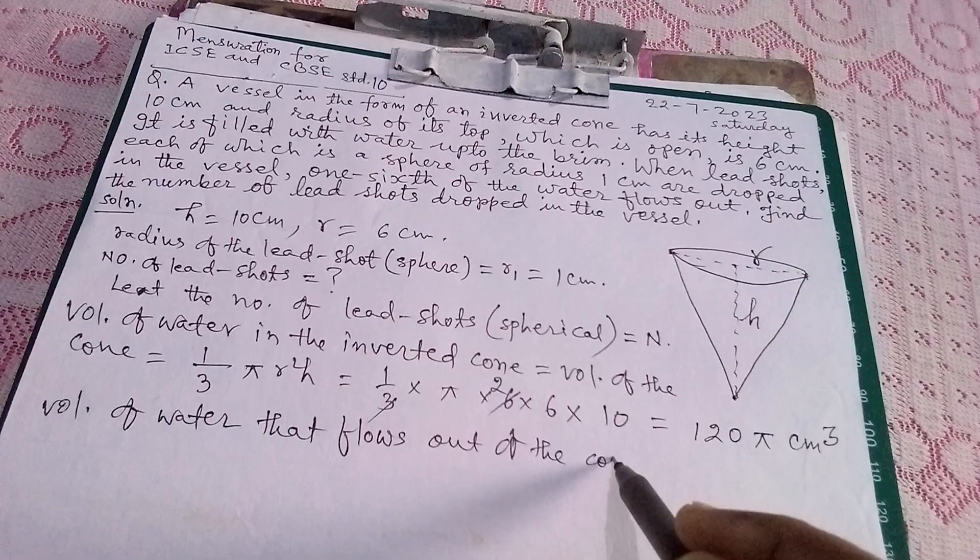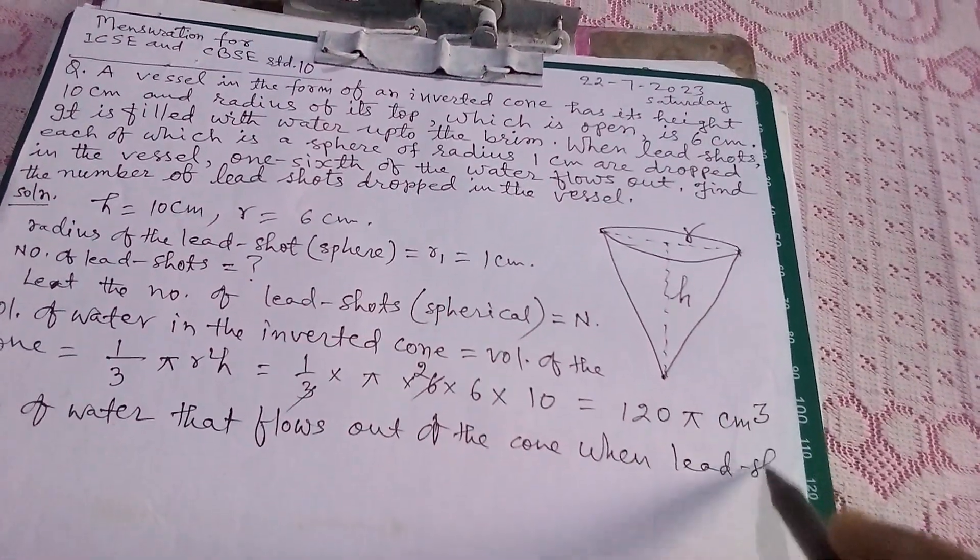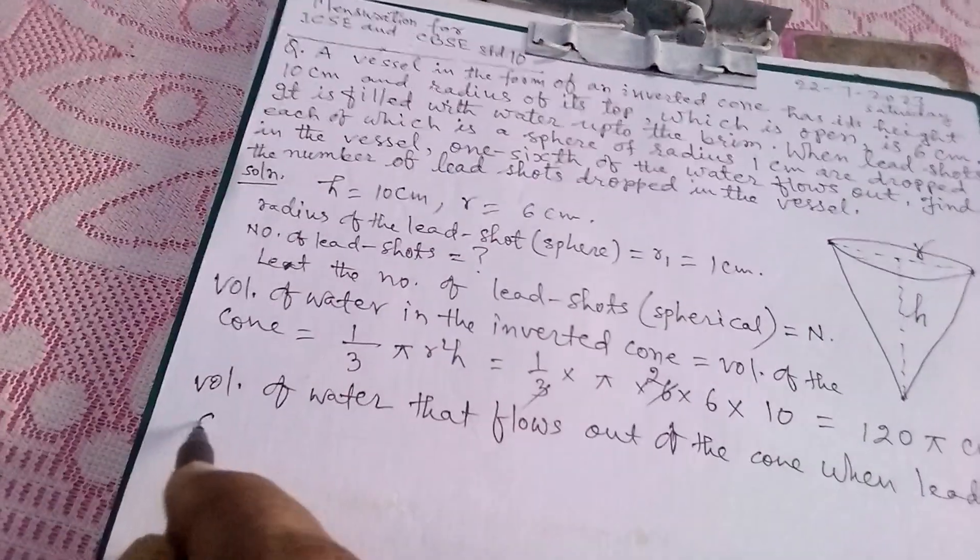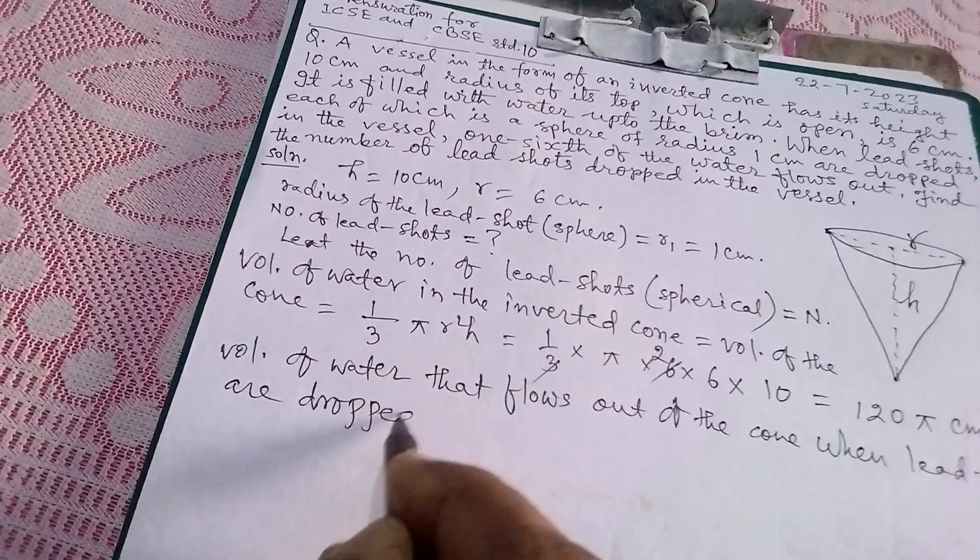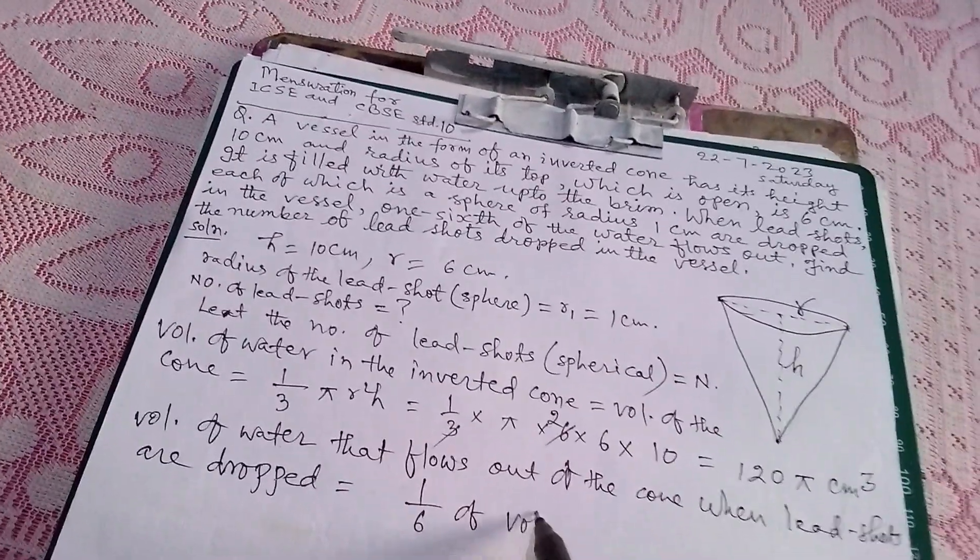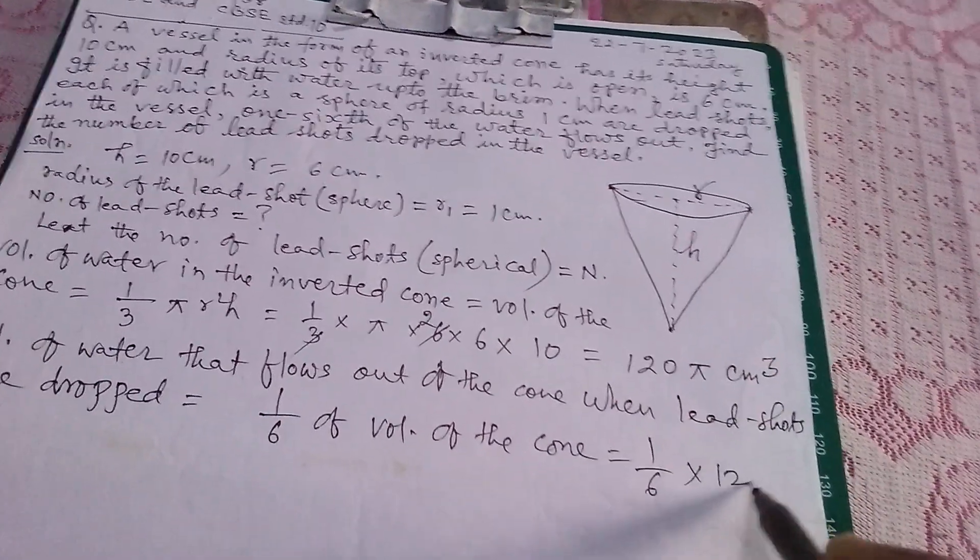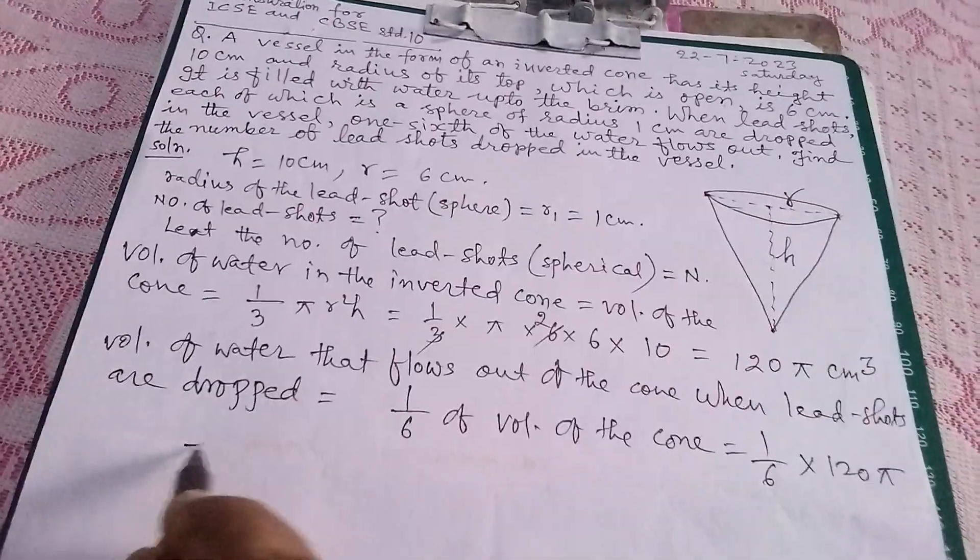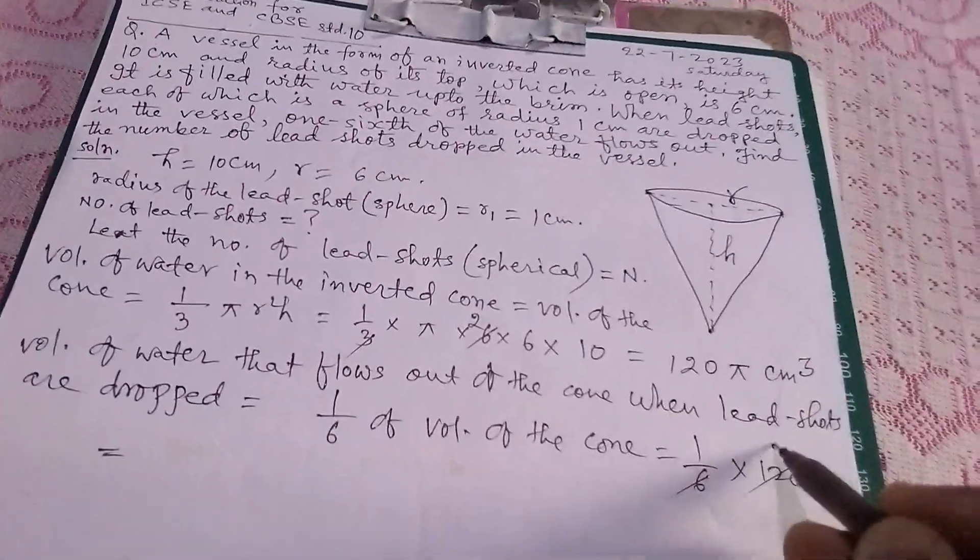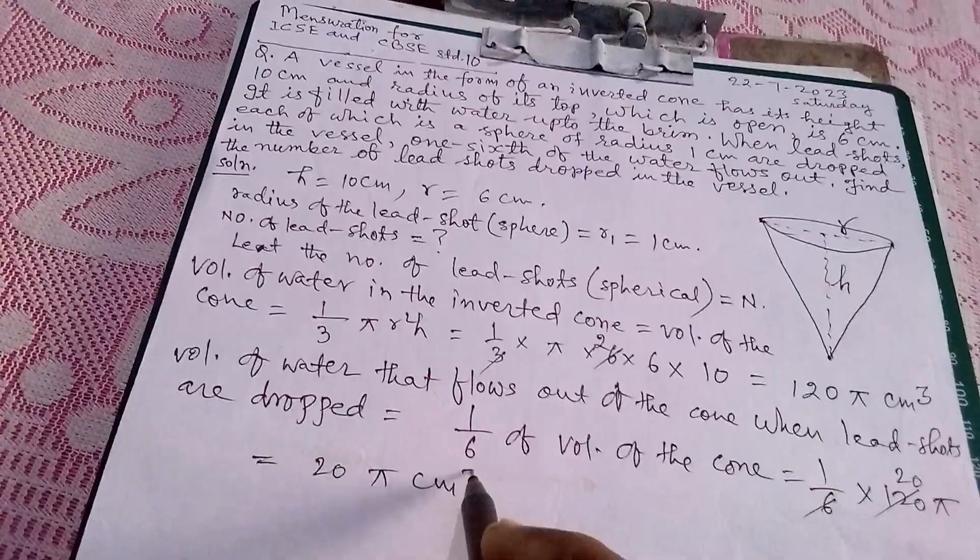When lead shots are dropped, that is 1/6 of volume of the cone, equals to 1/6 × 120π. So this is 20π cm³.